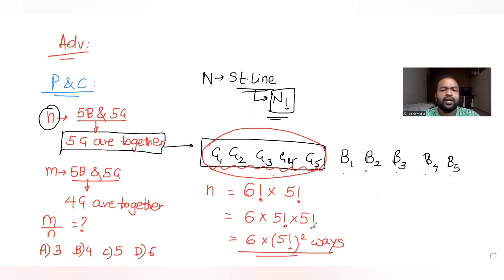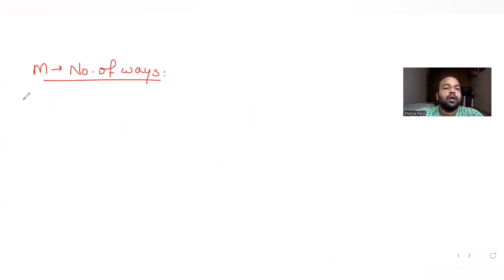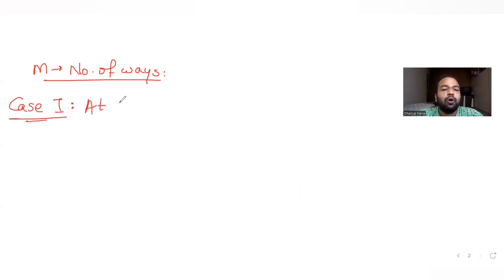Now let's find m, the number of ways where four girls are together. There are two cases to consider. Case one is when the four girls are at a corner of the queue.